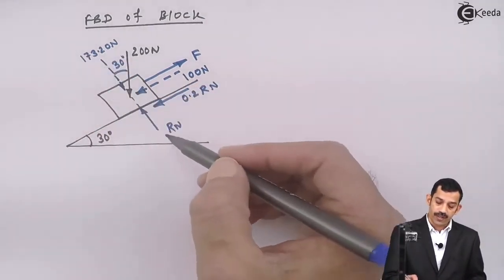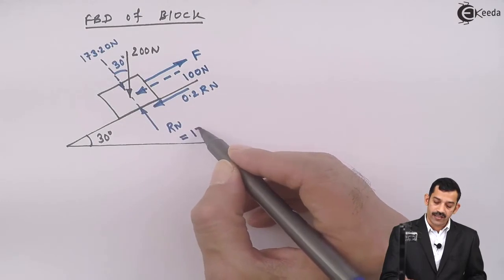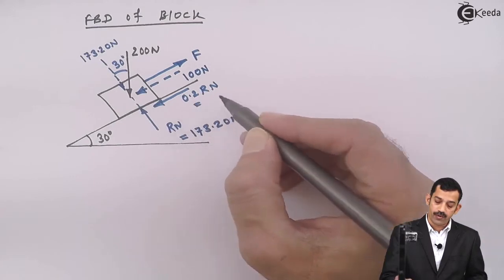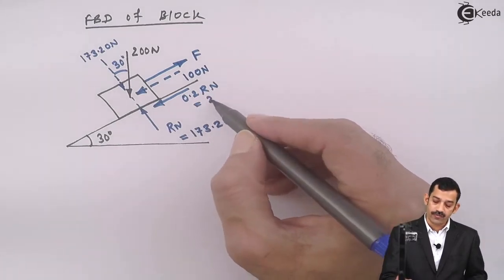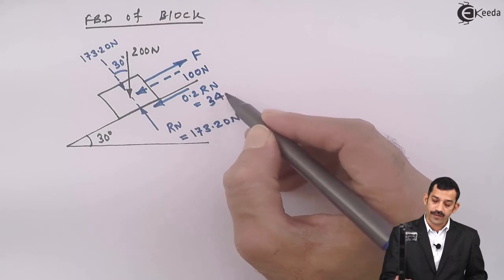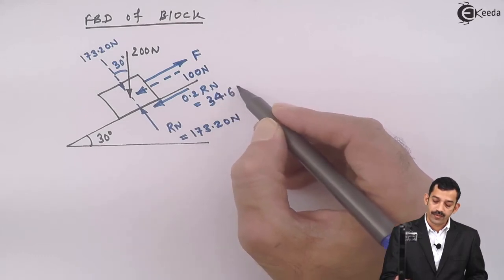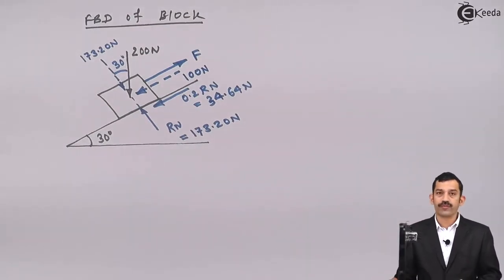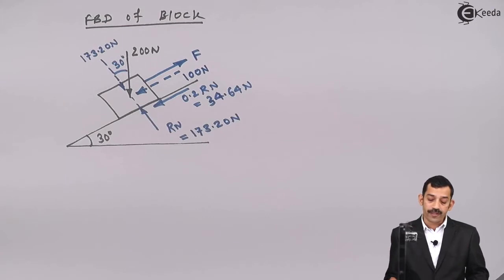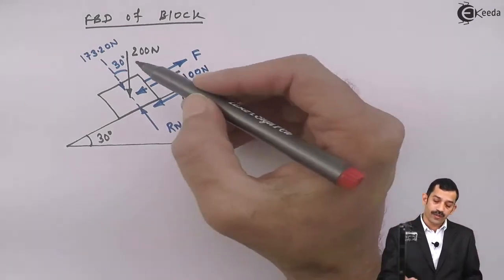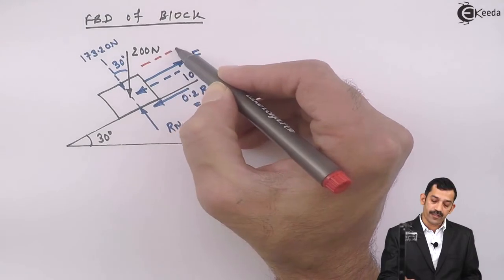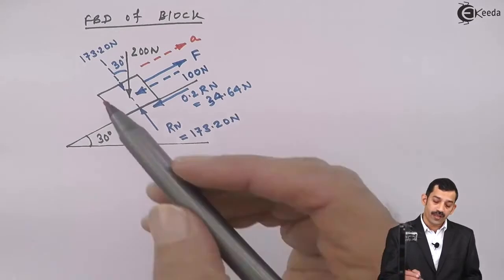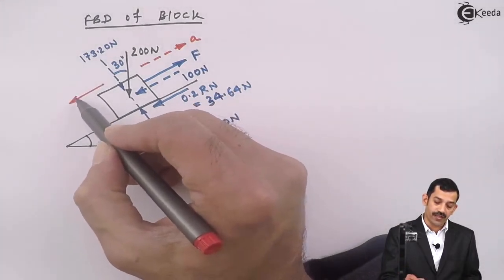Perpendicular to the plane there are only two forces, therefore Rn equals 173.20 Newton. Multiplying by 0.2, the frictional force comes out to be 34.64 Newton. Due to force F, there is an important force not yet represented — the inertia force. Therefore, we must know the direction of acceleration, which is along the plane in the upward direction. The inertia force equals mass into acceleration.